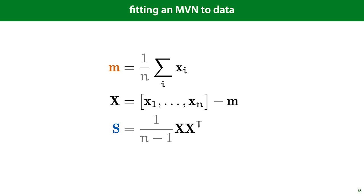For the sample covariance matrix, we create a mean-centered data matrix by subtracting the mean from every point, then multiply it by its transpose and divide by n or n minus 1. These are two estimators, just as in the case of the standard deviation: one is the maximum likelihood estimator and one is the unbiased estimator. For large datasets, it doesn't really matter which one you use.